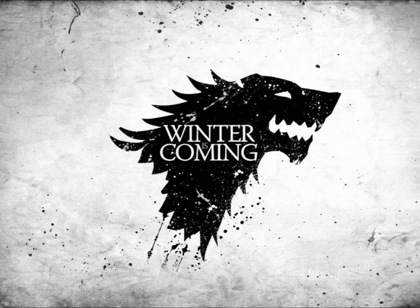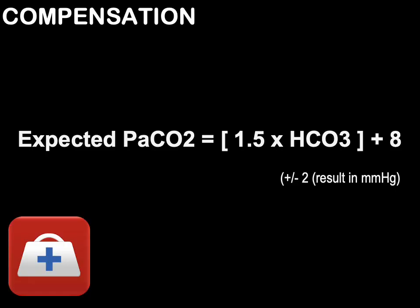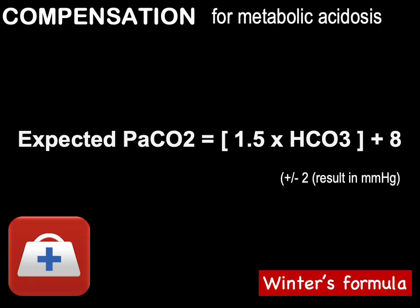Winter's formula is the most important compensatory formula to remember. It is used for predicting compensation for metabolic acidosis: expected PaCO2 equals 1.5 times bicarb plus 8, within plus or minus 2. If the expected CO2 that we've calculated is pretty much the same as the measured, then we know there's adequate compensation. If the expected PaCO2 is different from the measured, then we know there's a concomitant respiratory condition.